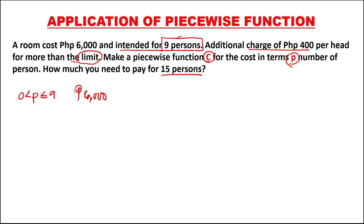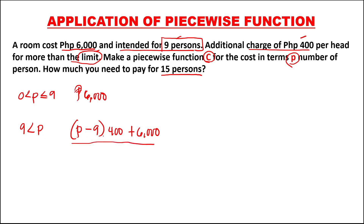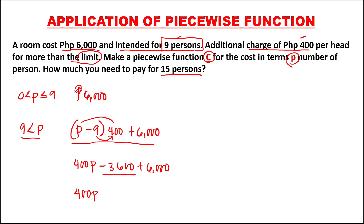There is an additional charge if more than the limit of 9 persons. So if there are 10 persons, that's the number minus 9, times the additional charge of 400, plus the regular cost of 6,000 pesos. This is the equation if the number of persons is more than 9. To simplify: 400P, then negative 9 times 400 is negative 3,600, plus 6,000, giving 400P plus 2,400.